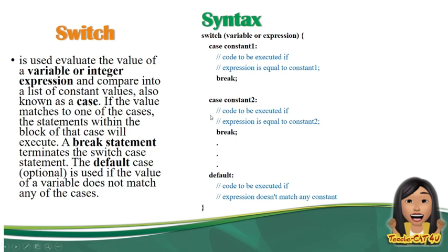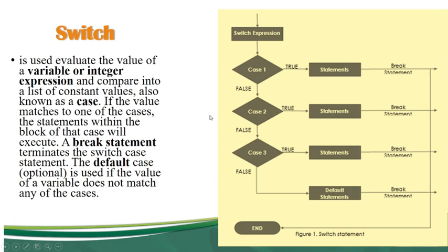So tingnan natin kung ano si switch. So ito yung sample na plot chart ng switch. For example, switch expression, then bababa siya sa case 1 kung equal ba siya. Pag nag true, gagawin yung statement. Pag hindi, bababa sa susunod na case. Pag nag true, gagawin yung statement ni case 2. Pero pag nag false yan, bababa ulit siya sa case. Hanggang mat-meet lahat ng given case, bababa na siya lahat sa default na statement. Then mag-e-end na yung program ninyo. So ito yung sample ng plot chart.